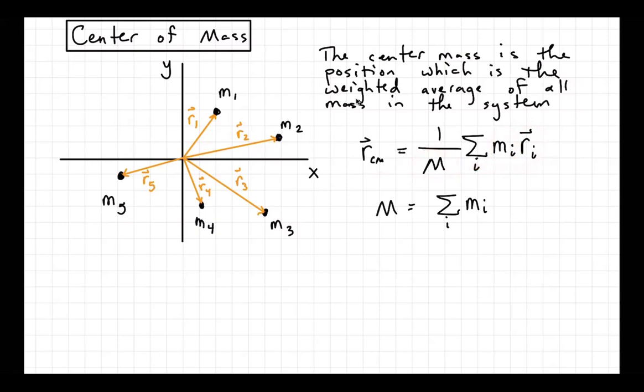This is weighting each position by the mass at that position, and then dividing out by the total mass to get back units of position. So where the position of the center of mass for this system would depend on the values of the masses, of course. Let's just say it's somewhere over here — that spot would be the center of mass. We could draw a vector to represent the center of mass as R_CM, though that position will depend on the specific values of the masses.